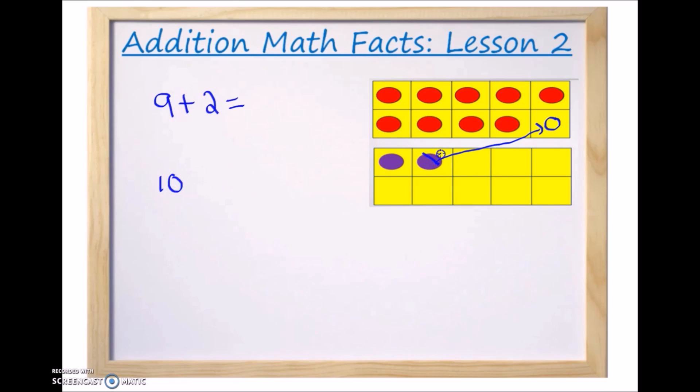So now we have 10. So I'm going to cross this one out because that's no longer on here. We now have it here. So we have 10 plus 1 because we only have one counter left now on the second 10 frame. So 10 plus 1. Well, 10 plus 1, that's equal to 11. So 9 plus 2 is equal to 11 because we were able to make 10 and then have one left over. And that gave us 11. So 9 plus 2 is equal to 11 and 10 plus 1 is equal to 11.